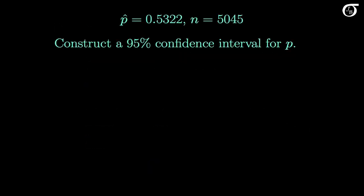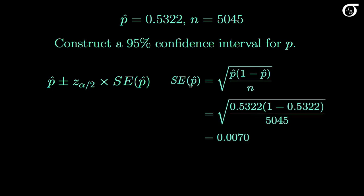Here again is the sample proportion and sample size, and suppose we wish to construct a 95% confidence interval for the parameter P. Our formula for constructing the confidence interval is the sample proportion P hat, plus and minus the margin of error, which is made up of the usual Z sub alpha over 2 value, times the standard error of P hat. For confidence intervals, the standard error of P hat is the square root of P hat times 1 minus P hat over n. Here, that works out to 0.0070.